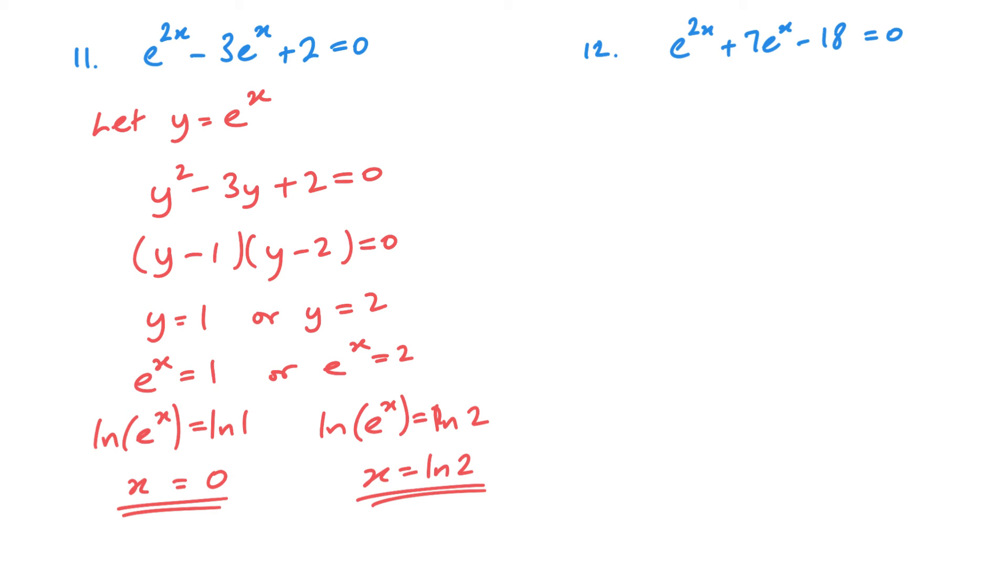I'll do 12 without using the substitution. And I'll just do it sped up. Now just to point out, at this point, e of x is always positive, so we need to discard this solution.